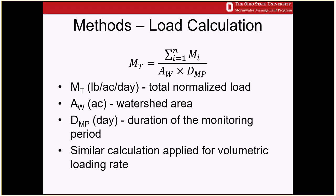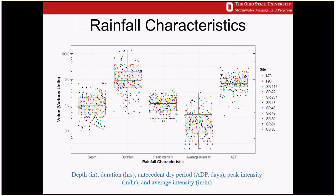Load calculations for gross solids used mass per acre per day: the sum of sample masses divided by watershed area multiplied by monitoring period duration. The same calculation was applied for volumetric loading rate. For gross solids sampling, because we sampled every 11 days, often multiple rainfall events occurred in each sample, giving maximum rainfall depths around 8 inches over a sampling period compared to 3.75 inches maximum for the PSD/TSS storm sampling.